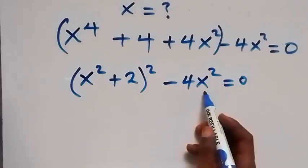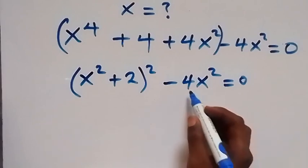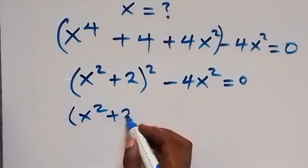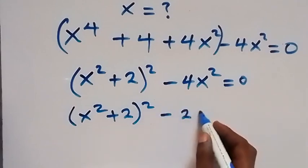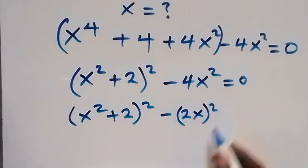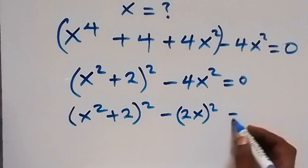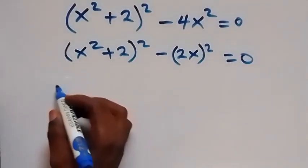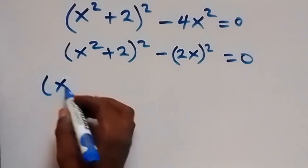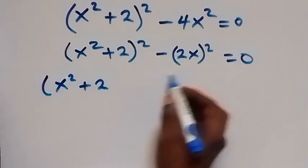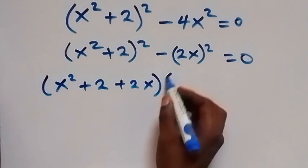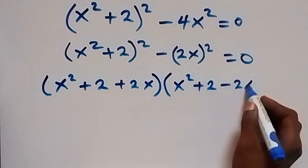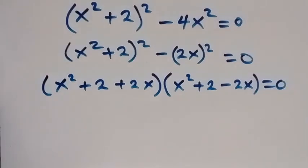From here, let's write 4x² again because 4 can be written as 2², so this becomes (x² + 2)² minus (2x)², which still gives us 4x², equals zero. Now we have a difference of two squares, which we can write as (x² + 2 + 2x) multiplied by (x² + 2 − 2x), equals zero.